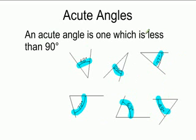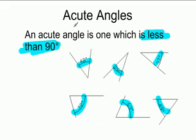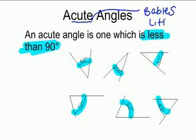All of those are less than 90 so they are acute angles. I also like to remember the word acute because I see the word 'cute' in it. I think babies are cute and babies are little, and so because babies are cute and little they have to be less than 90. That's just a silly way to remember, but that's how I remember acute angles — they're cute babies and they're tiny.